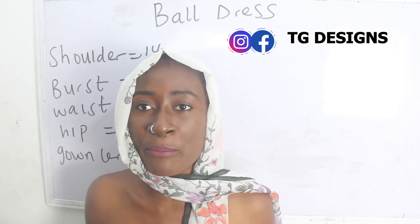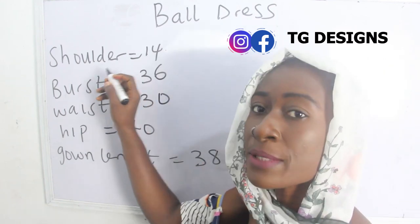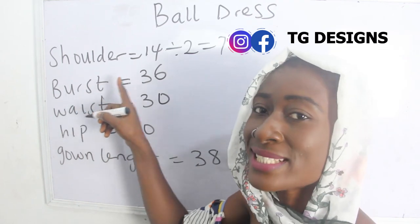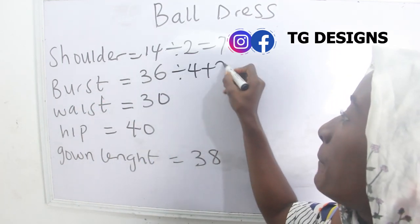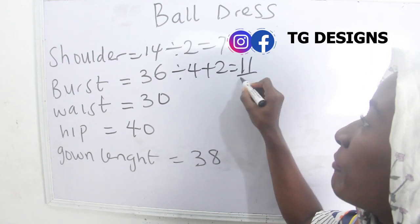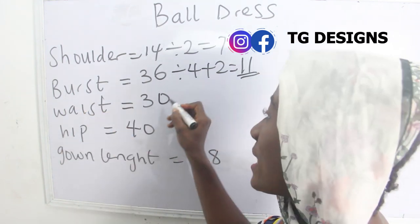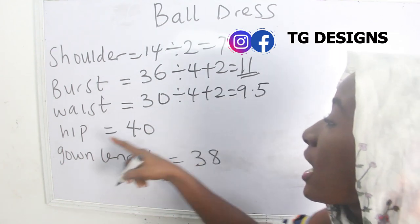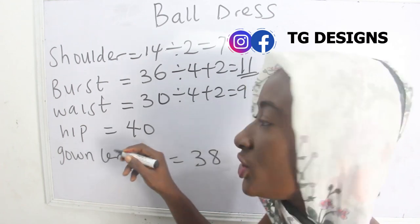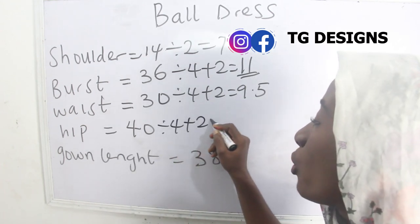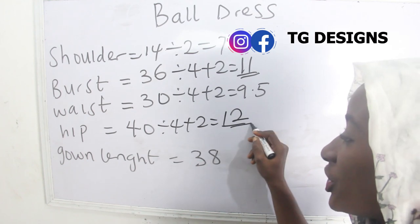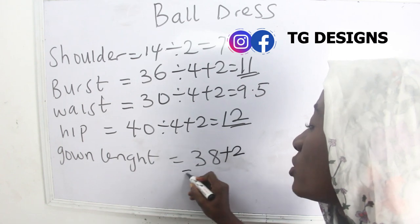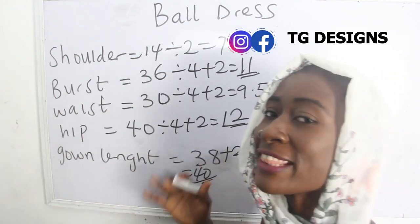Let's calculate our basic measurements. My shoulder is 14 divided by 2, giving 7 inches. My bust is 36 divided by 4 plus 2, giving 11 inches. My waist is 30 divided by 4 plus 2, giving 9.5 inches. My hip is 40 divided by 4 plus 4, giving 12 inches. My gown length is 38 plus 2 inches allowance, giving 40 inches.